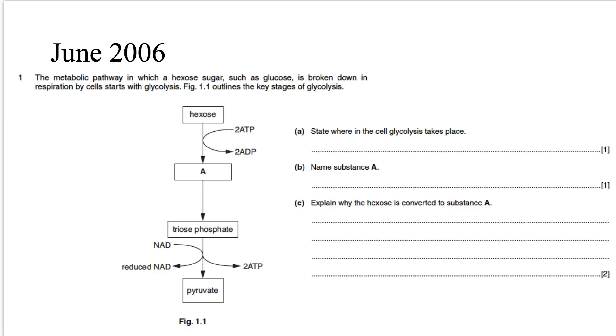Let's finish this video with a past paper question. The metabolic pathway in which a hexose sugar, such as glucose, is broken down in respiration by cells, starts with glycolysis. And figure one outlines the key stages of glycolysis. State where in the cell glycolysis takes place? Remember, glycolysis takes place in cytoplasm.